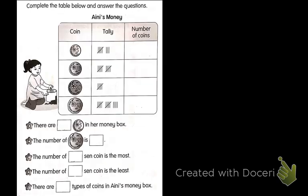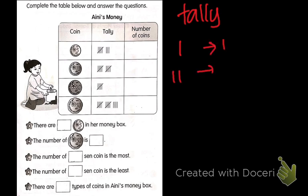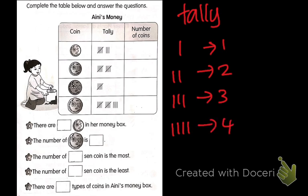Next. Complete the table below and answer the questions. Remember tally — how to count? This is one, two, three, four, five. You have to remember this.